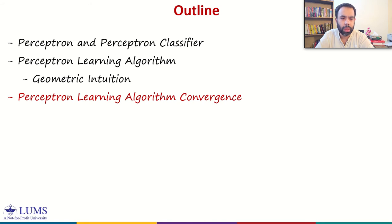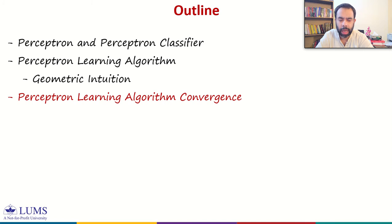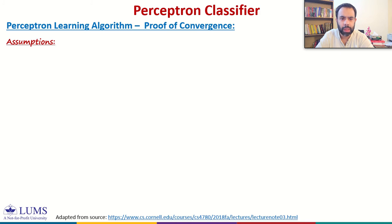The perceptron was the first algorithm with a strong formal guarantee. If we have a dataset that is linearly separable, the perceptron will always find a separating hyperplane in a finite number of updates. If the data is not linearly separable, the perceptron learning algorithm will loop forever. To formally prove this convergence, we start with some assumptions.